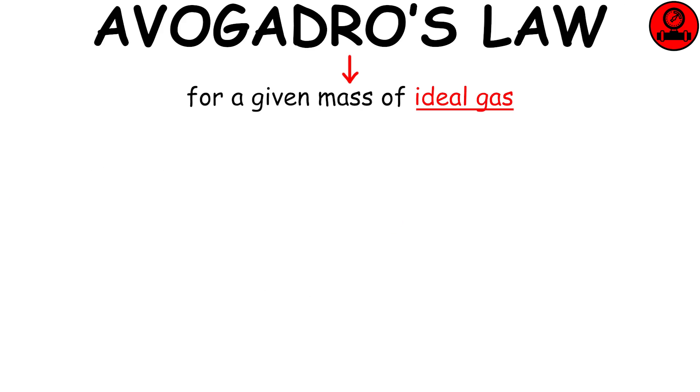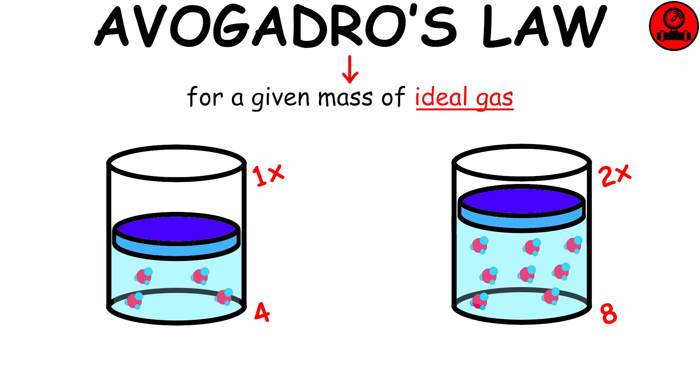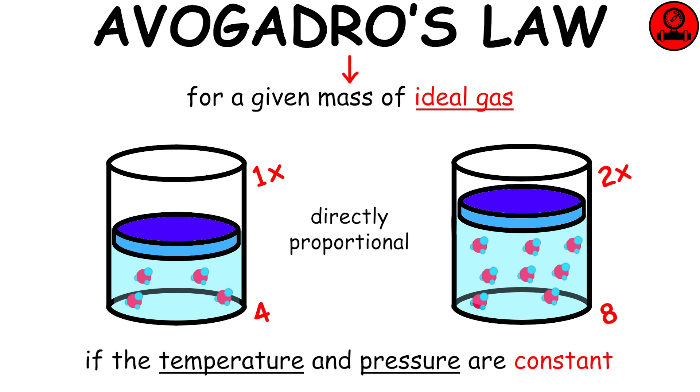Avogadro's Law states that for a given mass of ideal gas, the volume and quantity of the gas are directly proportional if the temperature and pressure are constant.